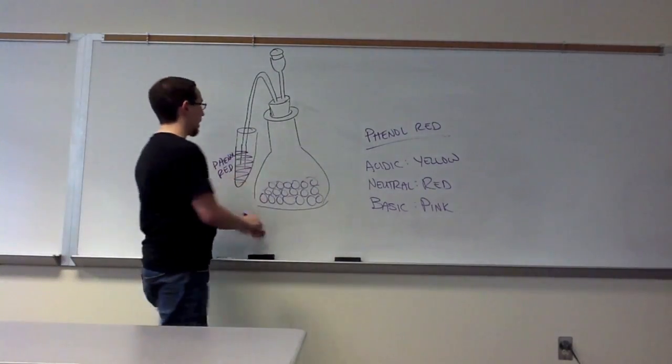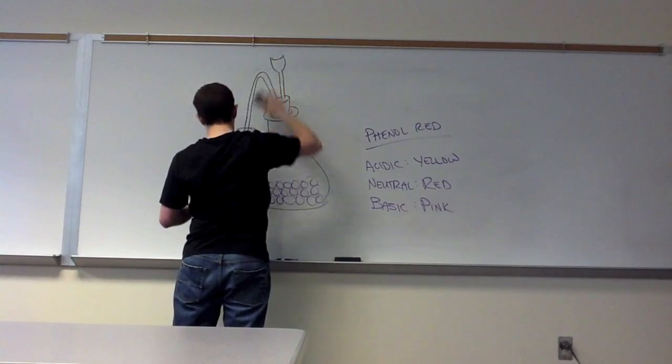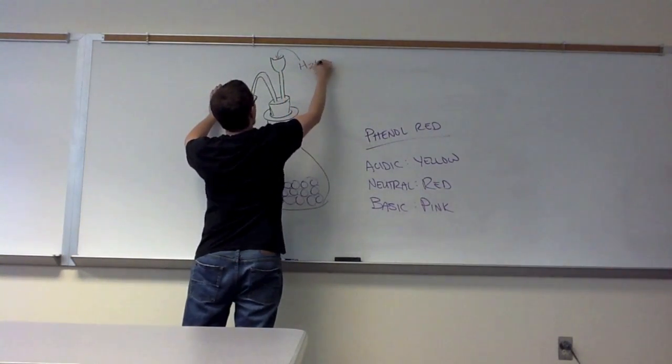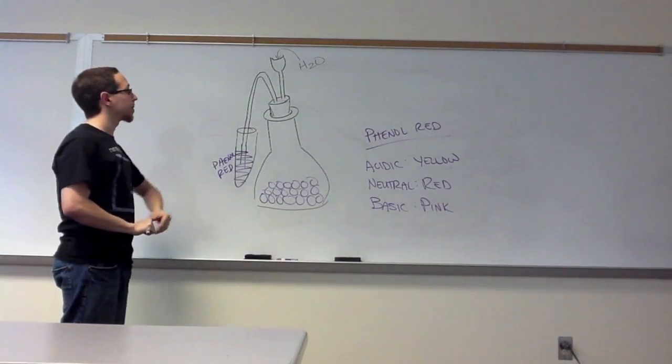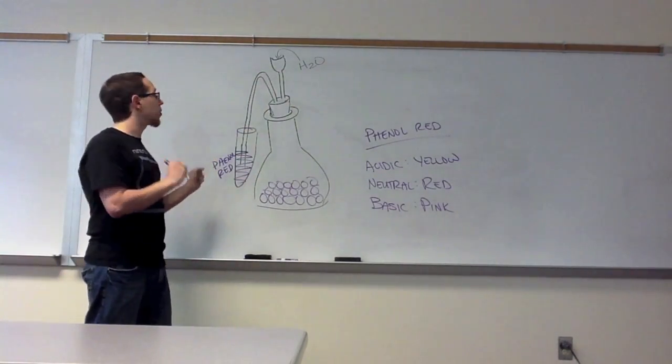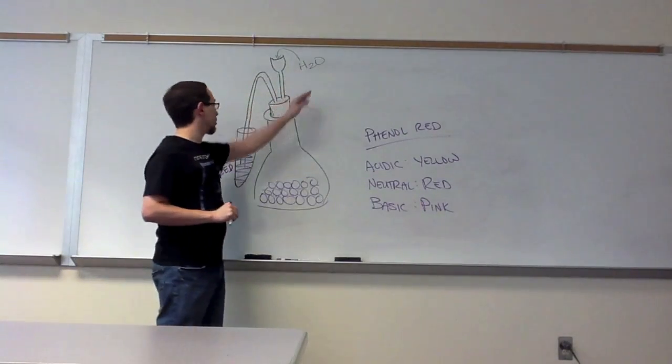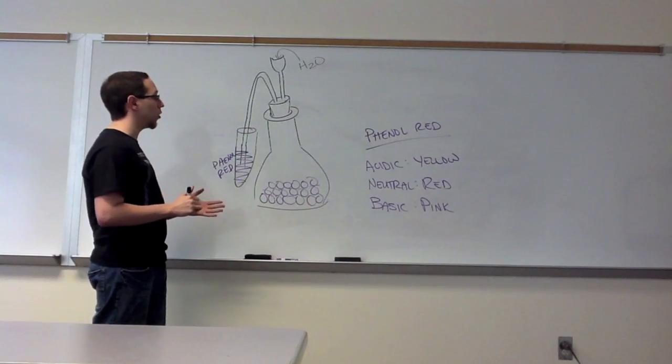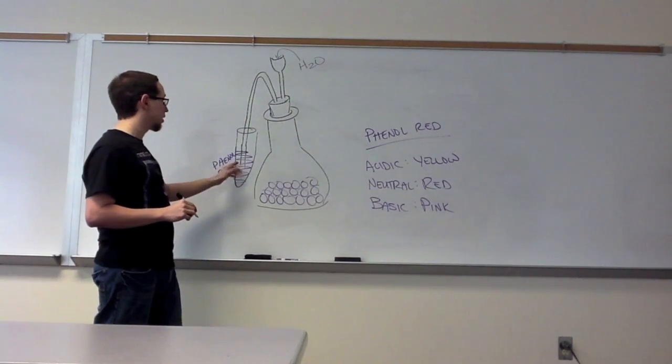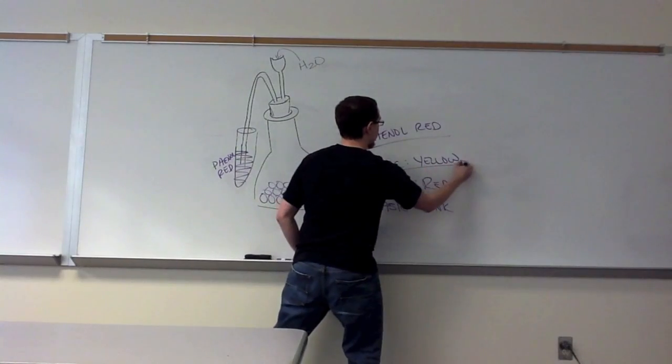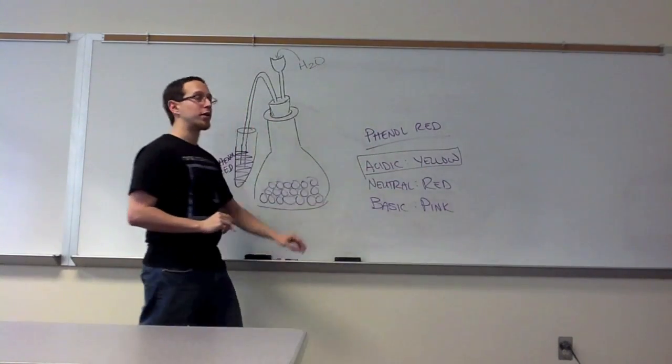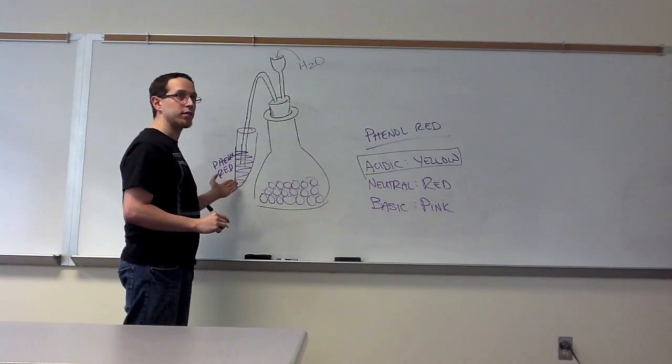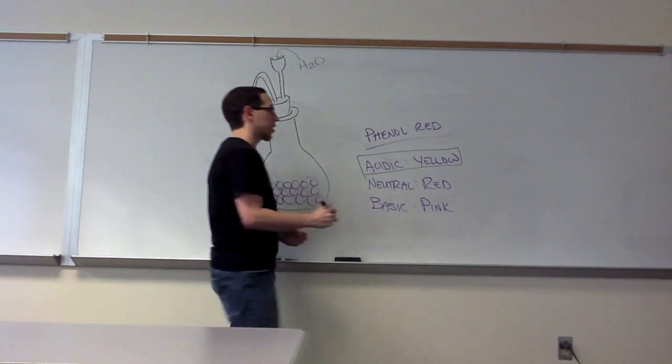What we're going to do next is we removed the rubber stopper and we added water. Part of the reason why we added this water was to force the gas through here. But more importantly, when water interacts with carbon dioxide, it actually forms what's known as carbonic acid. So if it forms an acid, that acid is going to cause this solution to turn yellow. So if this solution turned yellow, then it tells you that carbon dioxide was present.